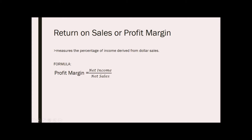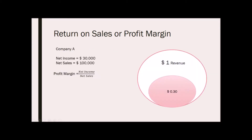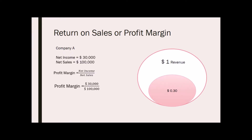For example, Company A has a net income of $30,000 and net sales of $100,000. To get the profit margin, we divide the net income, $30,000, over net sales, $100,000. We get 30%, which means that for every dollar, the company gets to keep 30 cents as profit.